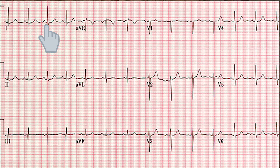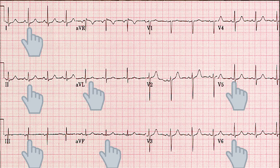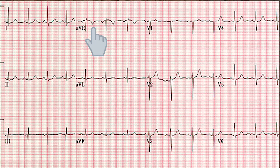Normal R-wave progression: the transition between a negative to a positive QRS complex in precordial leads should occur between V2 and V4. The QRS complex should be positive in lateral and inferior leads. The ST segment should be isoelectric — the ST segment itself is flat, but the takeoff of the T-wave is smooth and not abrupt. The T-wave should be upright in all leads except AVR, and sometimes V1 and V2, where it can be either inverted or upright.